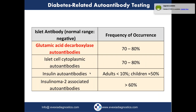For type 1 diabetes, consider diabetes-related autoantibody testing. The most common and most consistently positive is the glutamic acid decarboxylase (GAD) autoantibody — definitely order that one. Other tests include islet cell cytoplasmic autoantibodies, insulin autoantibodies, and insulinoma-2-associated autoantibodies. These are the tests to consider for identifying autoimmune-mediated pancreatic damage.